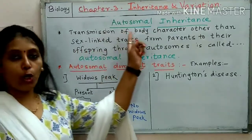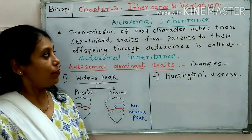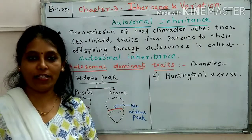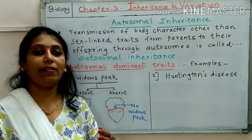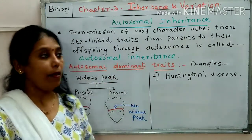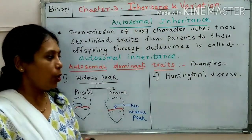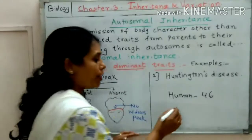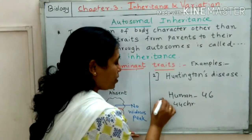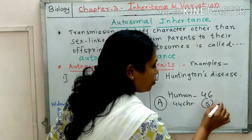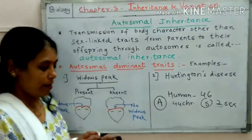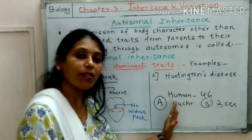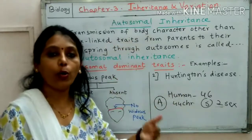Our today's topic is autosomal inheritance. First, we will see the simple word inheritance. Inheritance means transmission of characters from one generation to another generation. Parents transfer their characters or inherit their characters to their offspring. Autosomal inheritance: we know human beings consist of 46 chromosomes — out of 46, 44 chromosomes are autosomes and 2 chromosomes are sex chromosomes. So autosomal inheritance means if the characters are transferred from the body chromosomes.